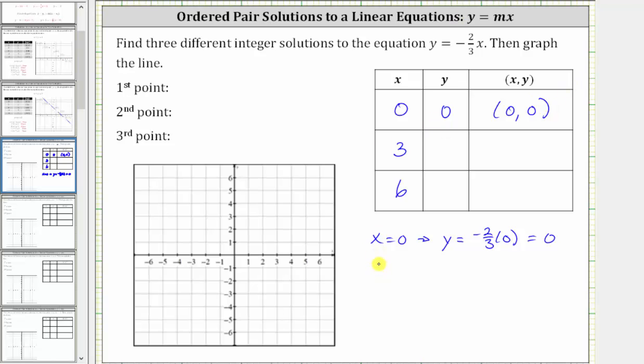Next, we have x equals three. When x is three, y is equal to negative 2/3 times three. Let's write three as a fraction with a denominator of one. Before multiplying, notice how we have a common factor of three between the numerator and denominator.